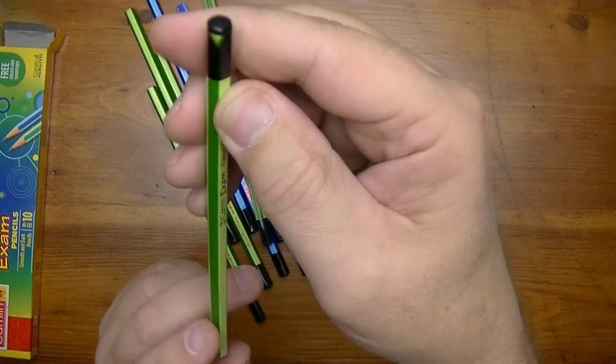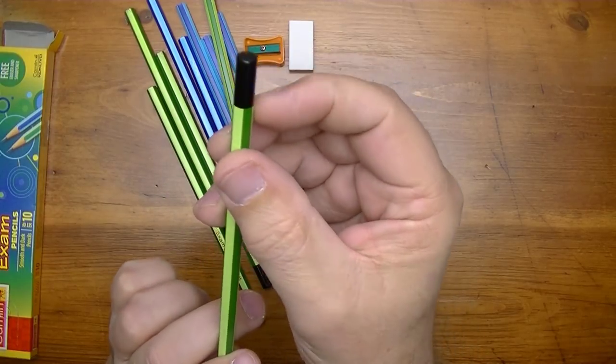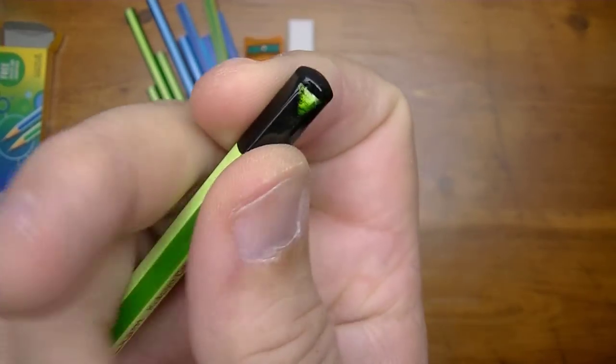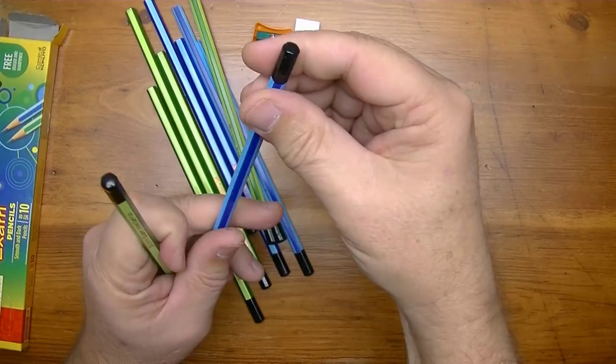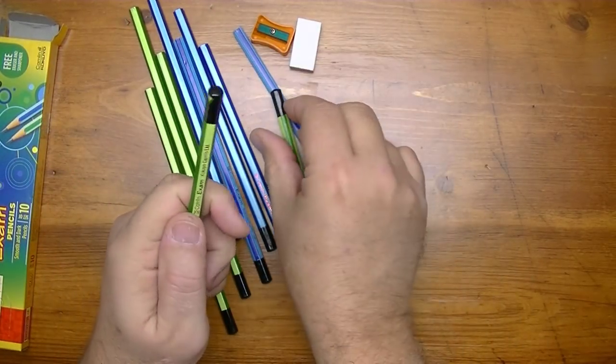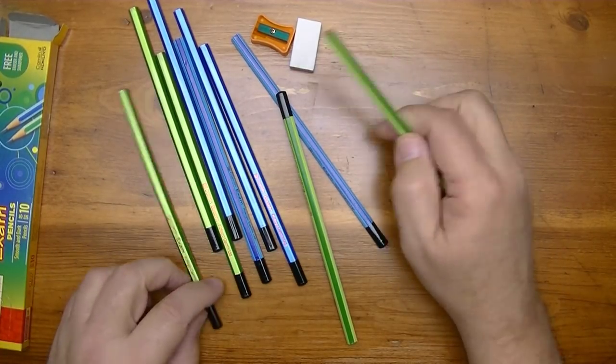And on the tip we can see that it has a black dip tip. Now this one here has a little bit of the green showing through there. And I don't believe that's intentional. Let me take a look here. And it's not. So that one there is a defect.